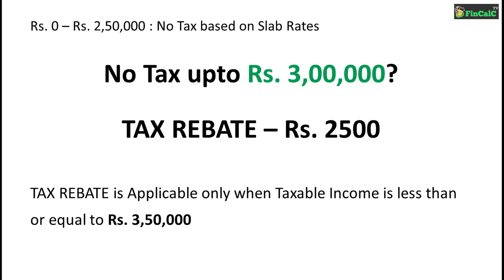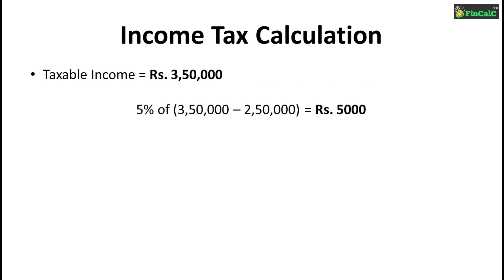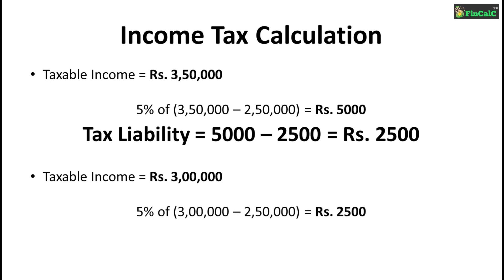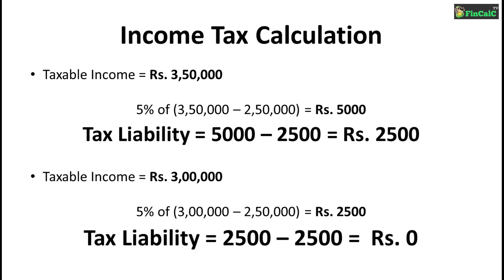So this is one of the most important tricks you should know — get your gross taxable income to less than or equal to Rs.3 lakhs by investing in various tax deduction schemes. The important thing to note is that the tax rebate is applicable only when your gross taxable income is less than or equal to Rs.350,000. So if your gross taxable income is Rs.350,000, your tax liability becomes Rs.5,000; after applying the maximum tax rebate of Rs.2,500, your tax liability becomes Rs.2,500. But if your gross taxable income is Rs.3 lakhs, your tax liability is Rs.2,500; after applying the Rs.2,500 tax rebate, your tax liability becomes zero. That is how you reduce your tax liability and pay absolutely zero income tax.